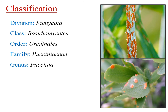Coming to the classification: Puccinia is placed under the class Basidiomycetes, order Uredinales, family Pucciniaceae. Under Uredinales, rust fungi are placed in two families — Pucciniaceae and Melampsoraceae. The difference between them is the presence of a stalk structure for the teliospore: in Pucciniaceae, teliospores have a stalk, whereas in Melampsoraceae, teliospores have no stalk and are sessile in nature.